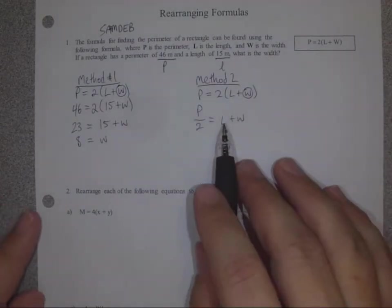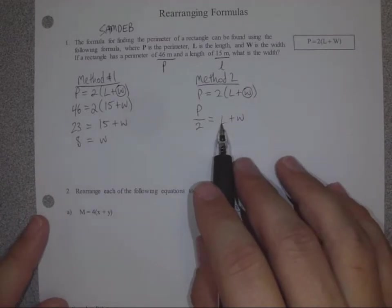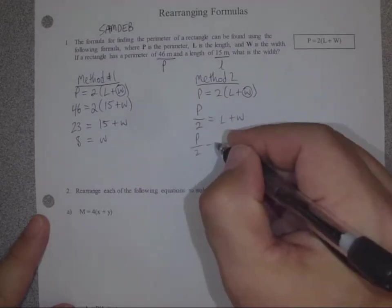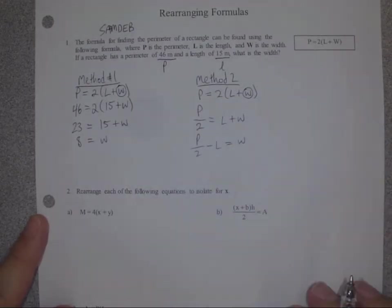This is what that would look like. P divided by 2 equals L plus W. So far so good. Next, we need to get rid of this plus L length. And the only way to do that is to subtract. So P divided by 2 minus L is equal to W.